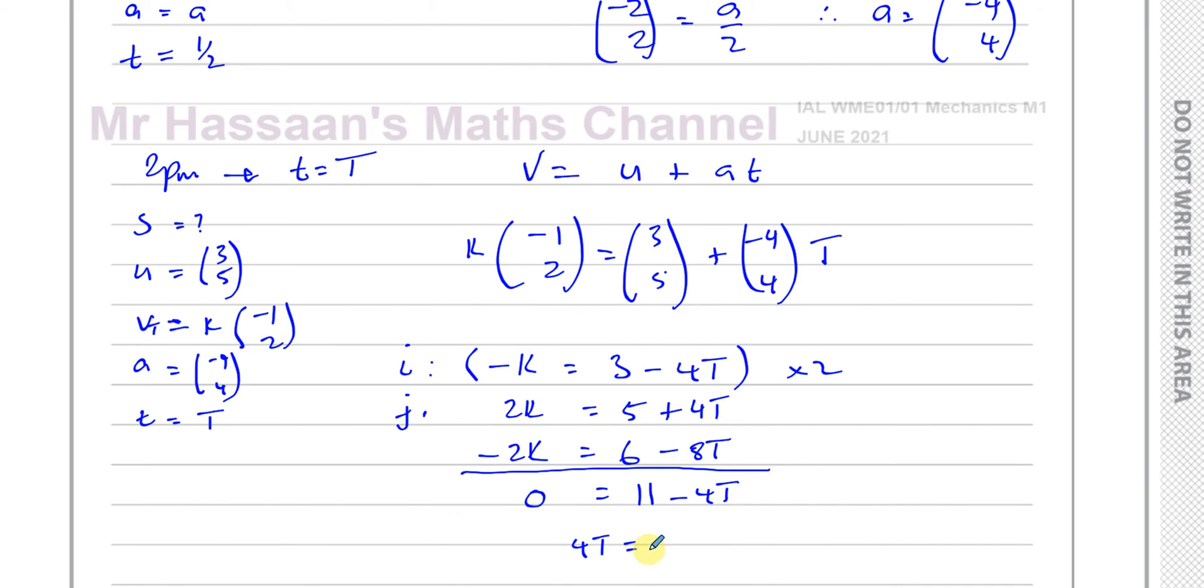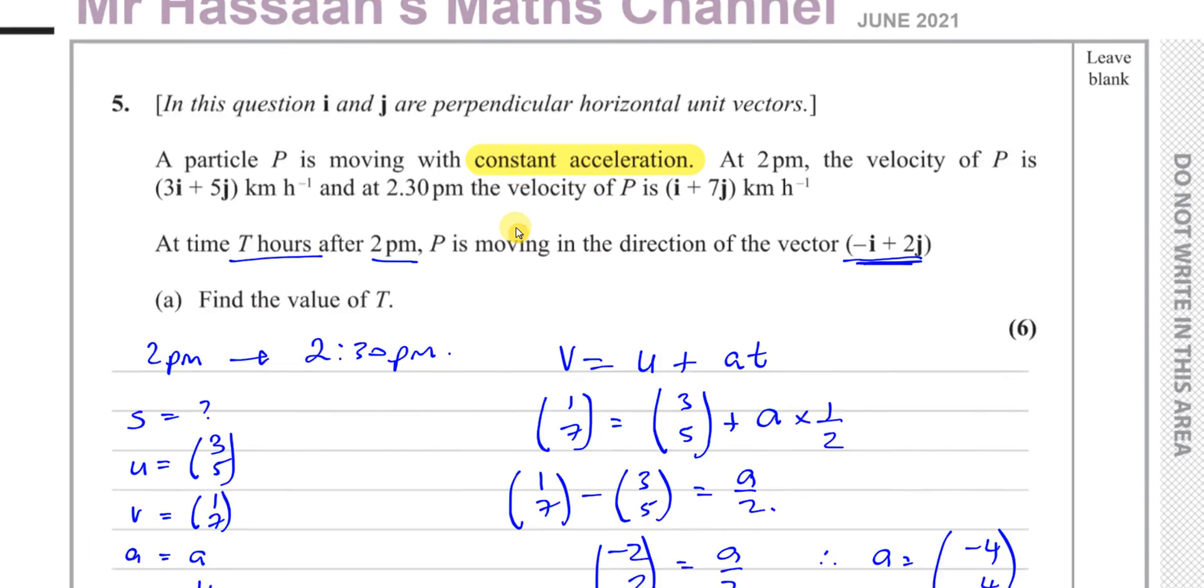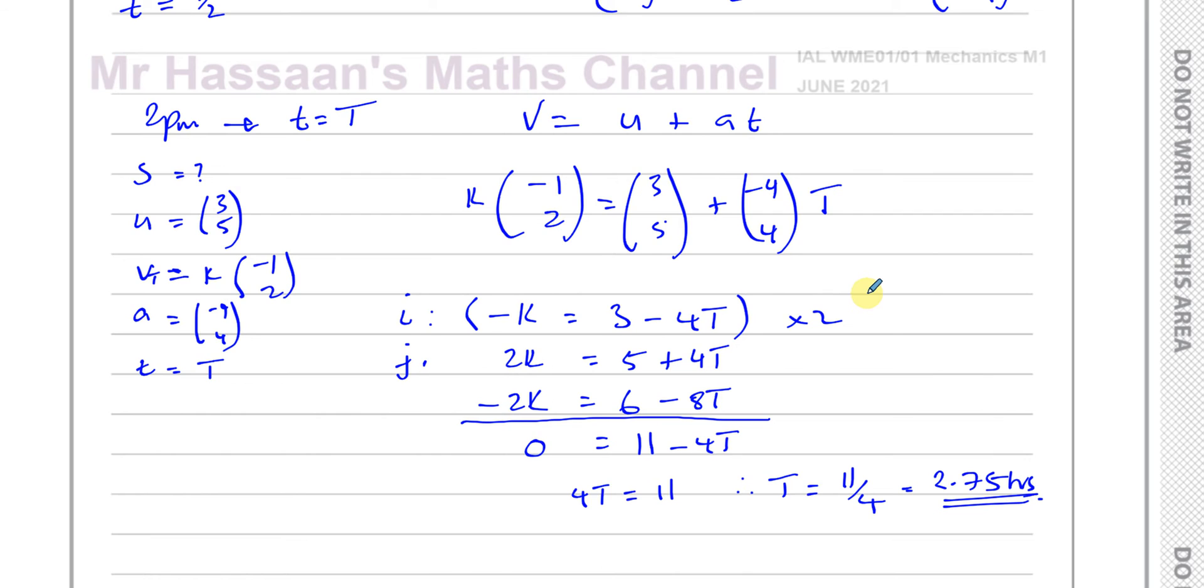So then 4T equals 11. Therefore T equals 11 divided by 4, which is 2.75 hours. That's the answer to question 5 part A. We basically found an equation for the velocity in terms of capital T, and we know the velocity at that time is parallel to this vector, so it's k times this vector.